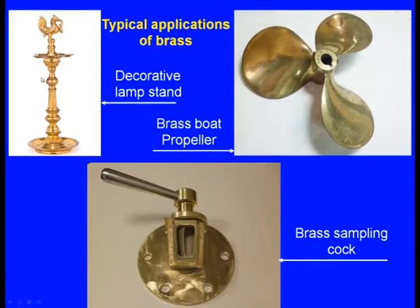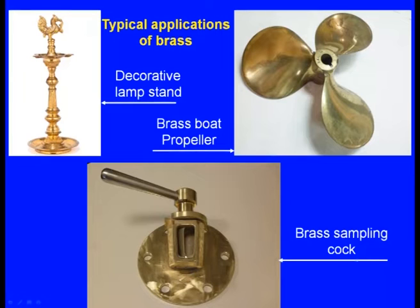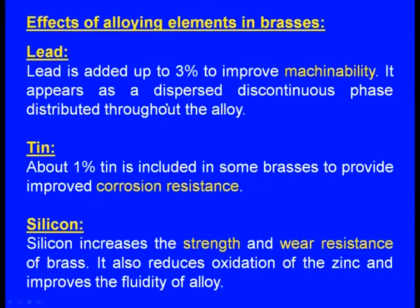More applications include a decorative lamp stand made up of brass, a brass boat propeller, and a brass sampling cork — all are brass alloy components. Now let us see the effects of alloying elements in brasses — what happens when we add different alloying elements?